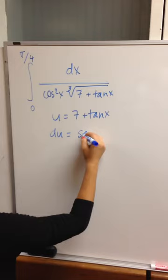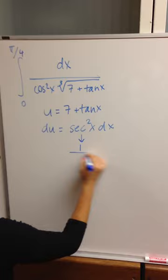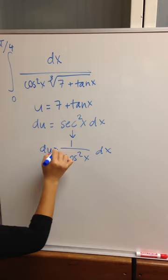And du will be secant squared x dx. But secant squared x is the same thing as 1 over cosine squared x, so that's what we're going to use as du.